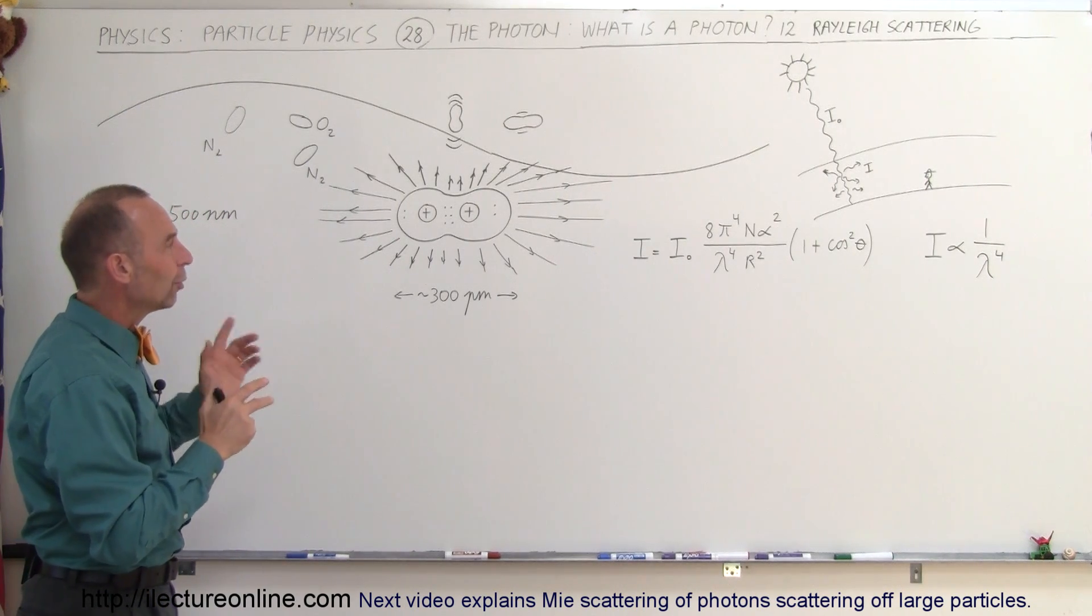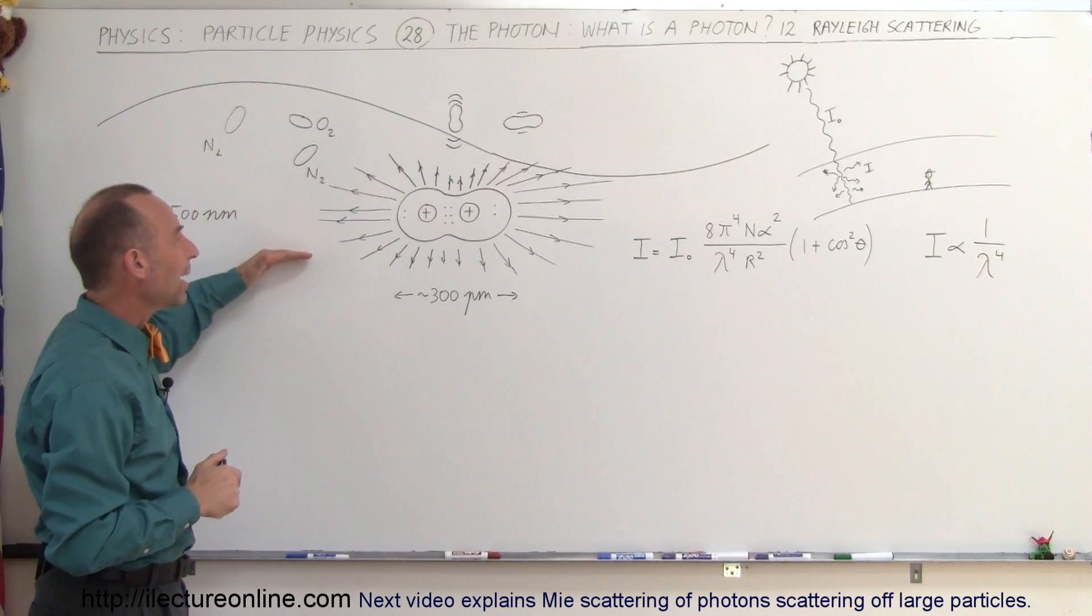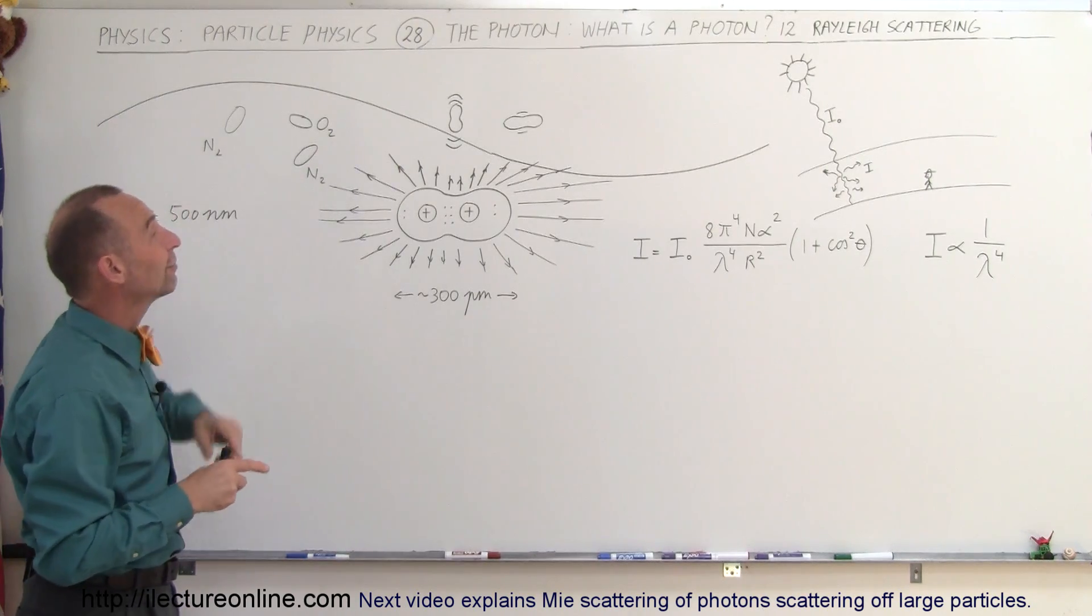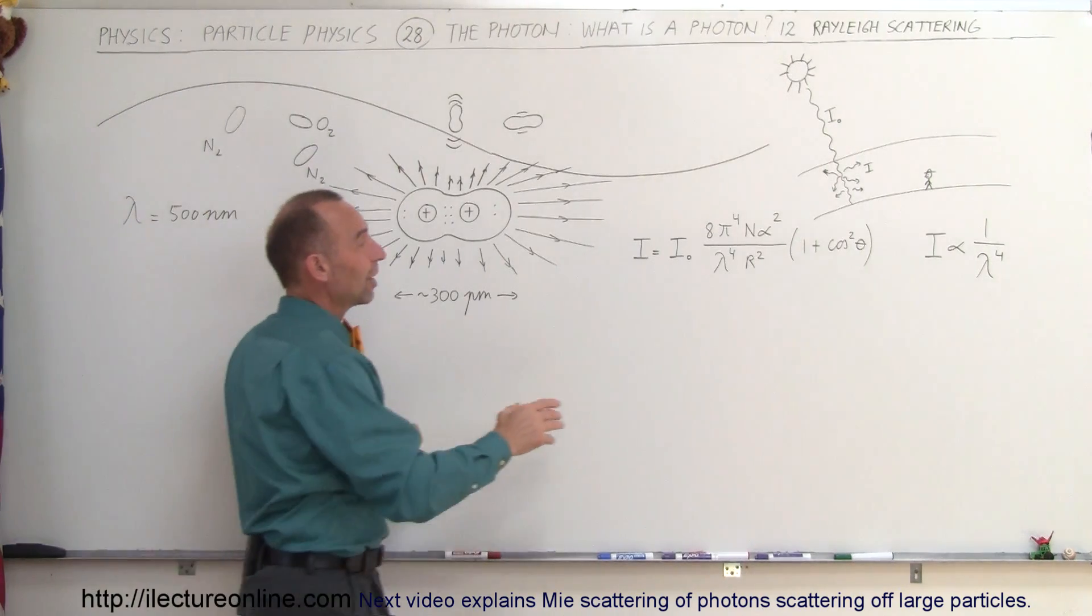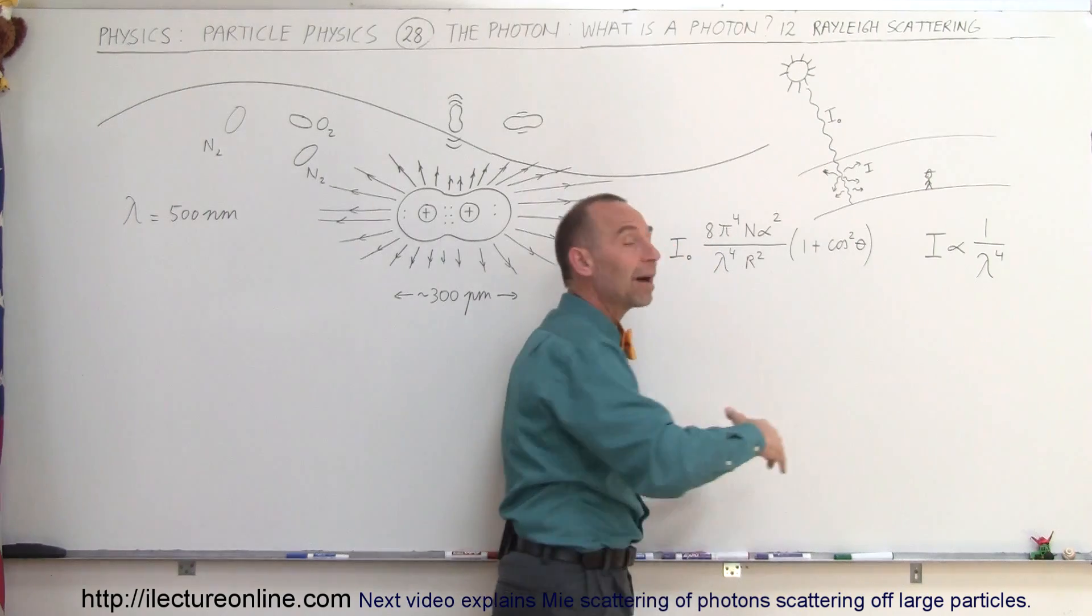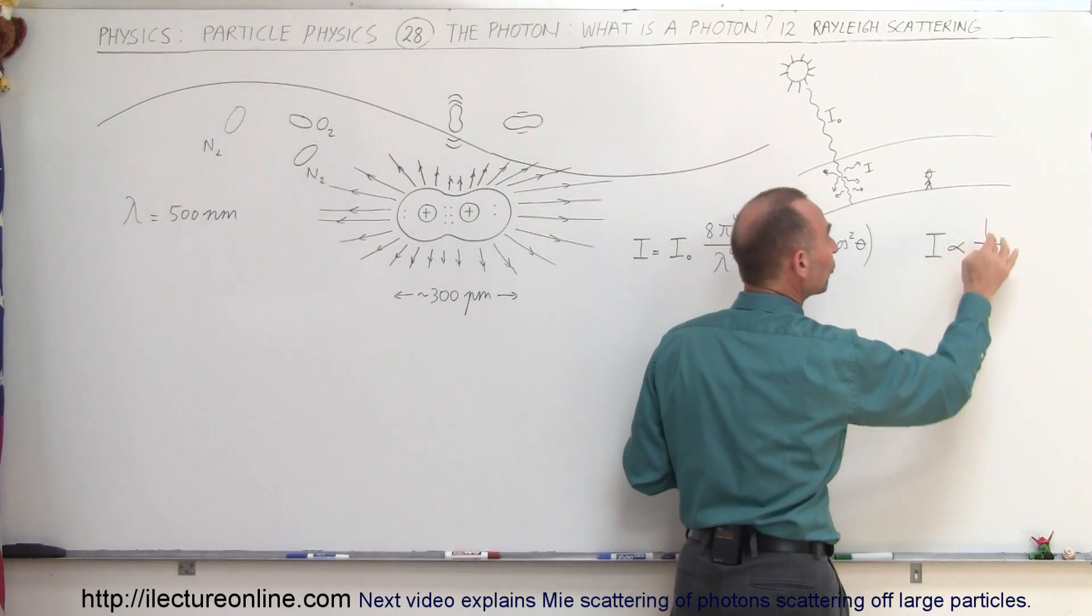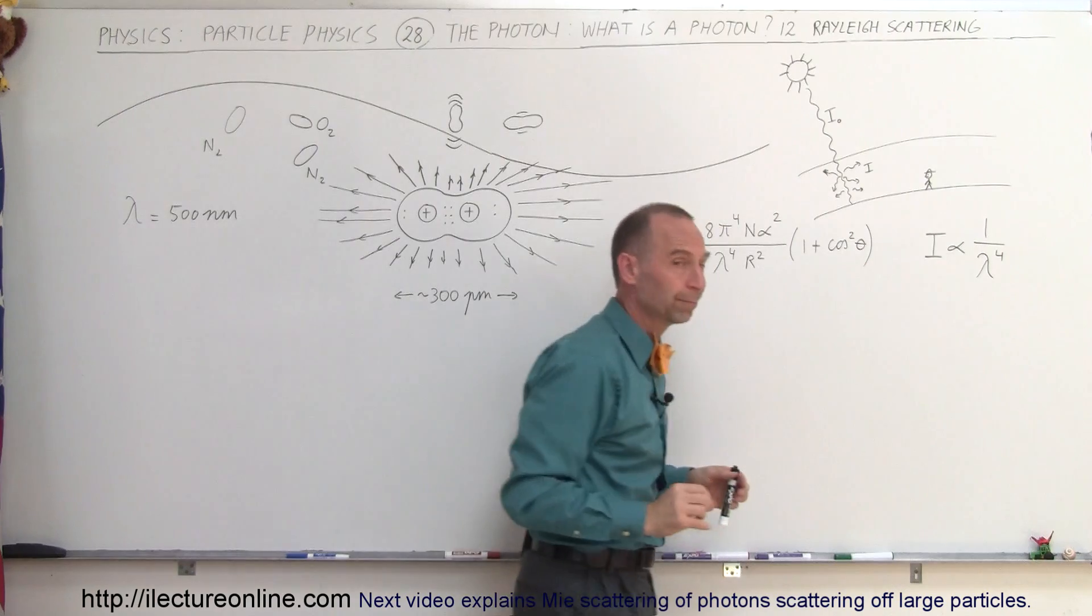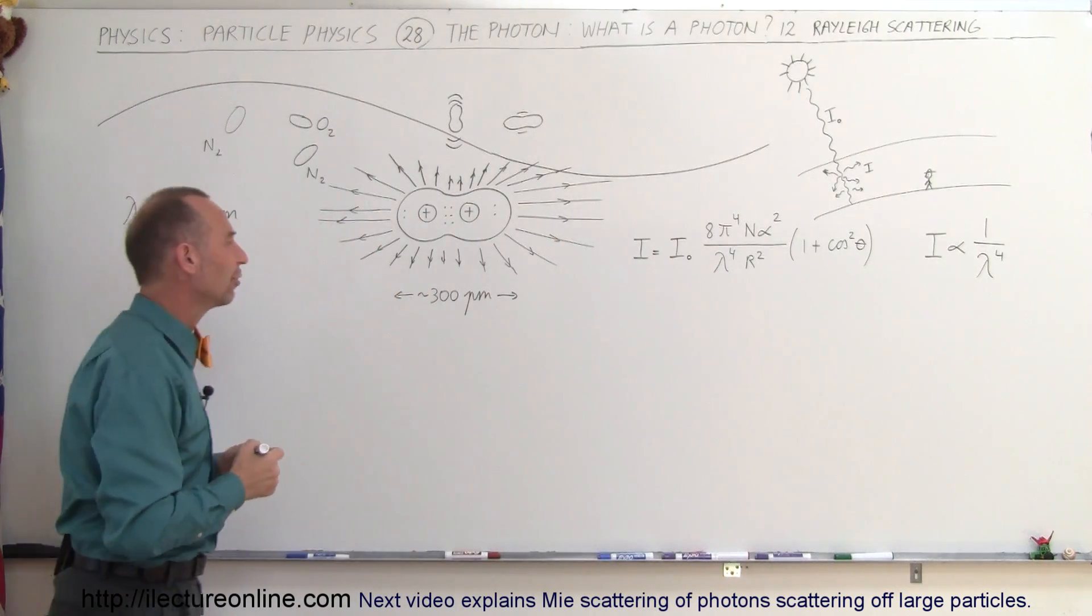Because of that, and also what we find is that the amount of scattering depends on the wavelength of the incoming light. It turns out that the intensity of the scattering, the amount of light that gets scattered, is proportional to one over the wavelength to the fourth power. It's kind of interesting. Let's explore that for a moment.